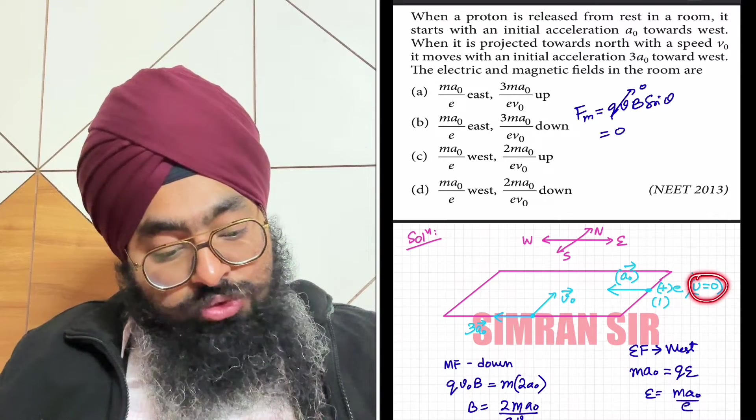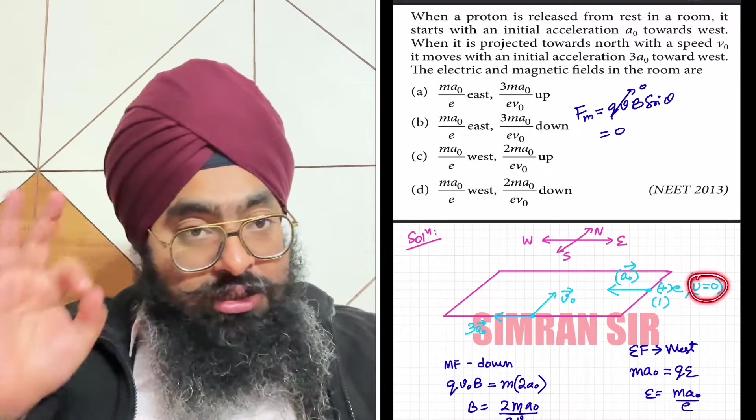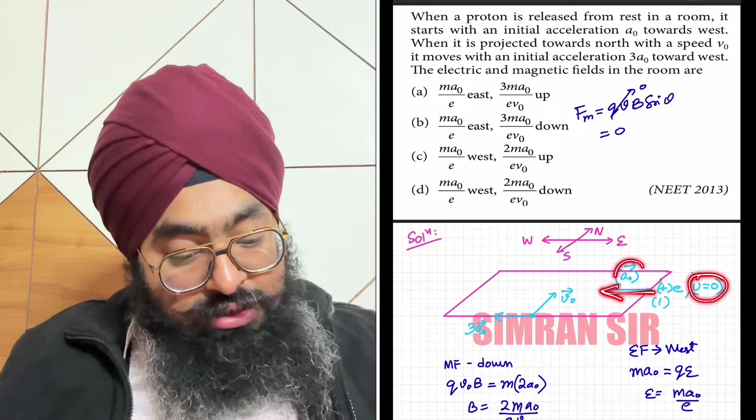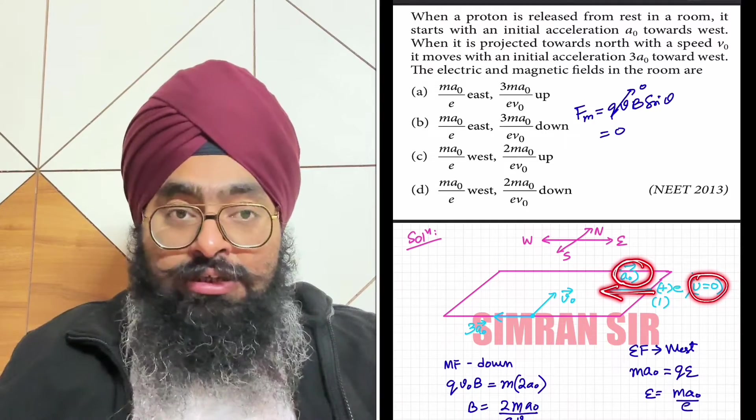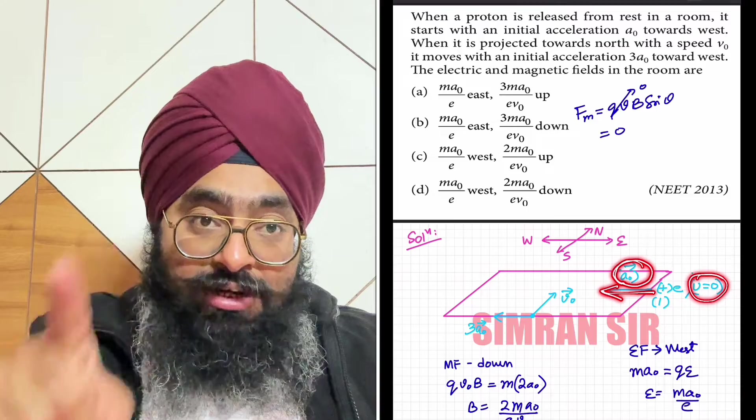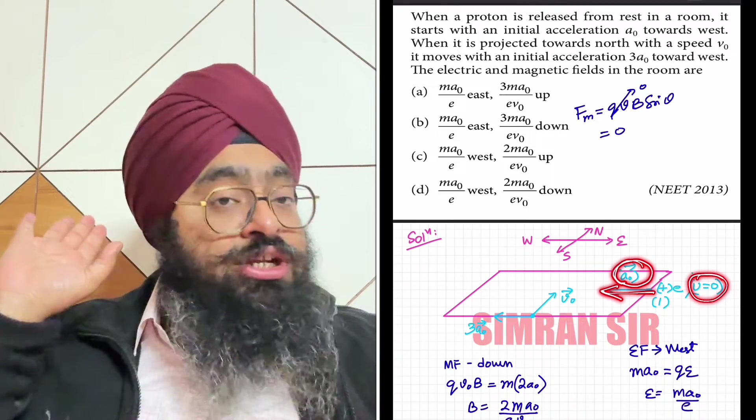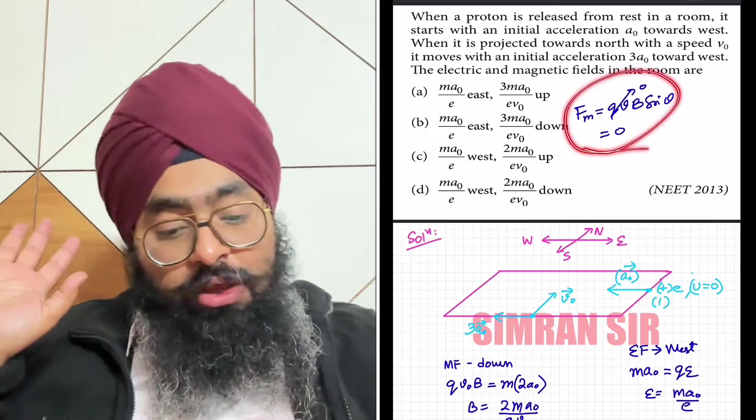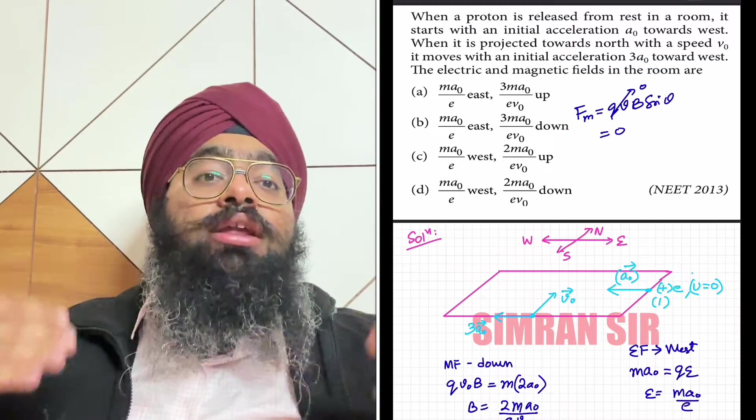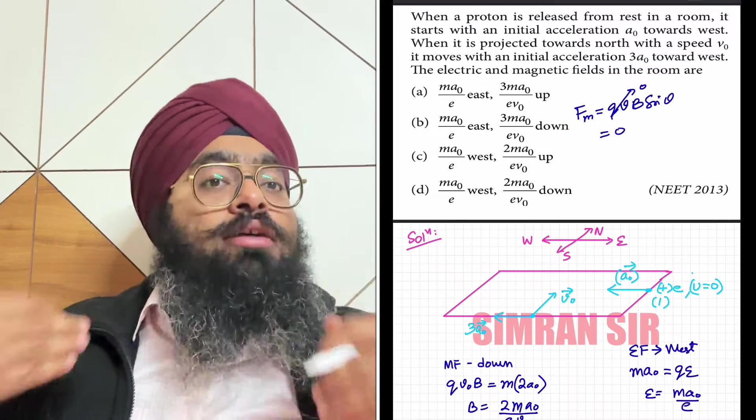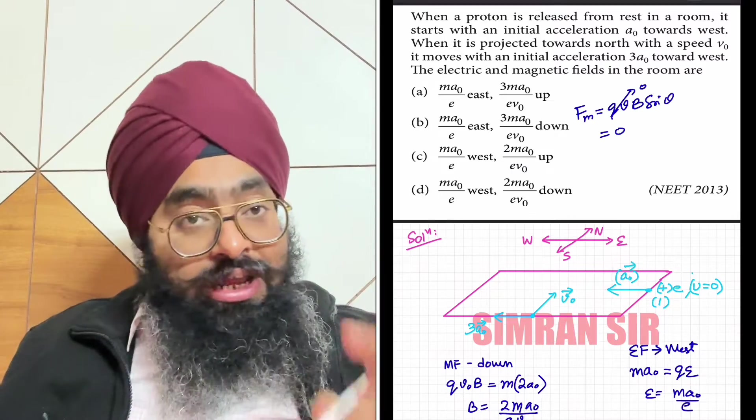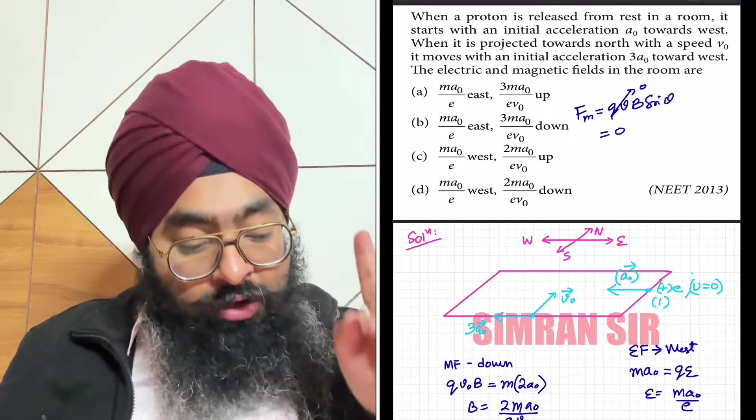When velocity is zero or initial speed is zero, then it moves in the direction of acceleration. The acceleration is only due to electric field, because magnetic field produces no force.